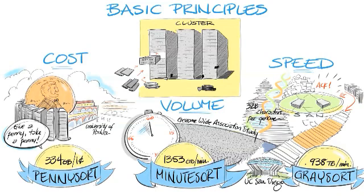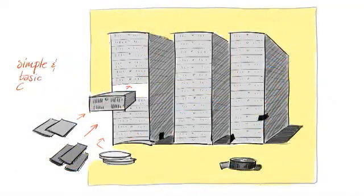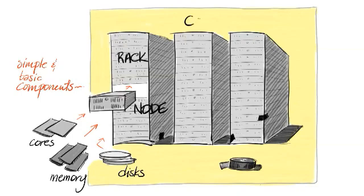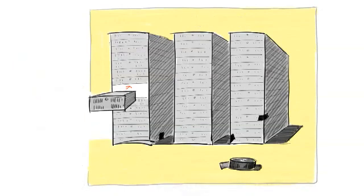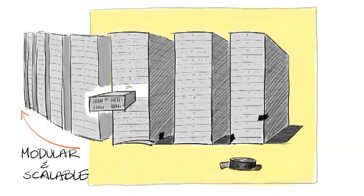Now that we understand the requirements behind it, let us understand the architecture design. A cluster architecture is based on a set of very simple and basic components that can be available in the thousands or hundreds of thousands and can be easily assembled together. It always starts with a node consisting of a set of commodity processing cores and main memory attached to a set of commodity disks. Then a stack of nodes forms a rack, and a group of racks form a cluster, all connected via high speed network to enable fast exchange of information. The architecture is highly modular and it scales out beautifully — just keep adding nodes and racks and the capacity keeps increasing.